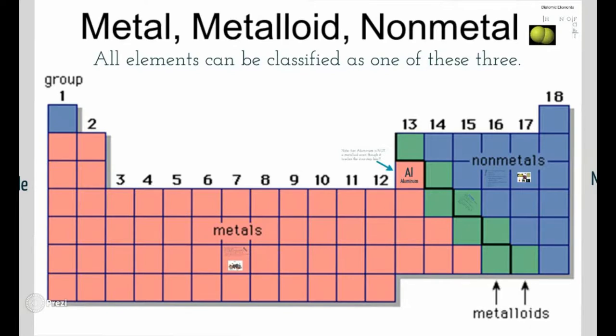These elements we actually do not know what they are yet. We don't know if they're metal, non-metal, or metalloid. It's because they don't exist in nature very long — actually, we created them. So if you did color in that last little group, it's not a big deal, but just know I'm not going to ask any questions on the test about it.